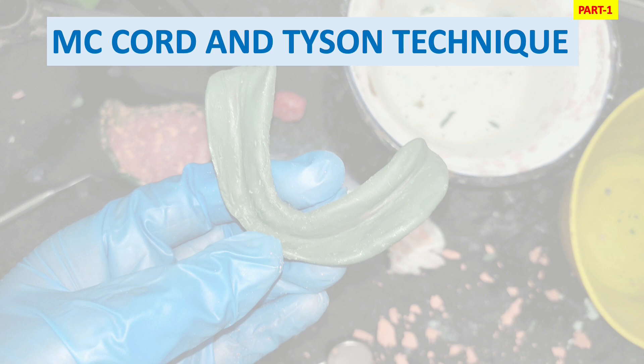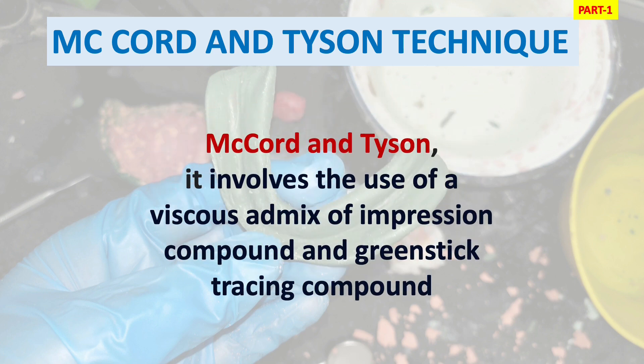First of all, you should know what is the McCord and Tyson technique, also called the Admix technique. This technique was given by McCord and Tyson, which is why it is called the McCord and Tyson technique. It involves the use of a viscous admix of impression compound and green stick impression compound. This technique is used for the secondary impression of flat or severely resorbed mandibular ridges, basically from Class 4 to Class 6 of the Coward and Howell classification.